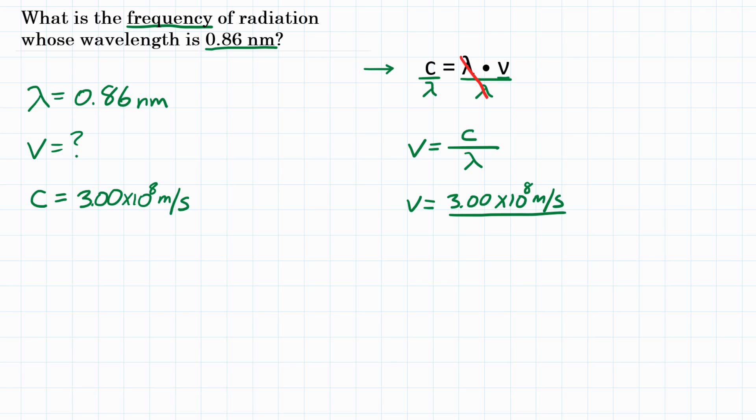Now, the speed of light has the units of meters per second. So if we divide by nanometers, our unit of length is not going to cancel out like we want. So we need to turn nanometers to meters. So we need to take our 0.86 nanometers, which is our wavelength, and we want to convert that by multiplying by our conversion factor to have meters so that it cancels out in our equation.